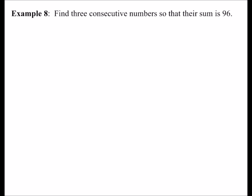Now we get on to the last section, which is the worded questions. The example says: find three consecutive numbers so that their sum is 96. The key words are: three numbers, consecutive — meaning they come in order like 5, 6, 7 or 13, 14, 15 with no gaps between them — and their sum, which means adding up, is 96.